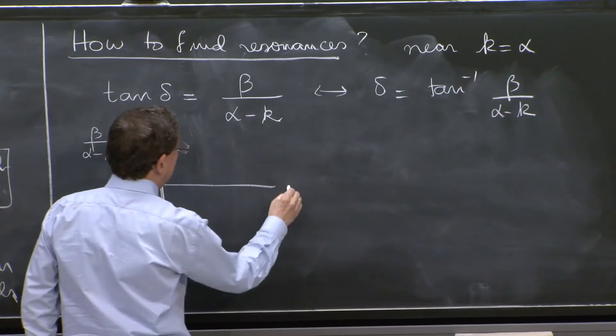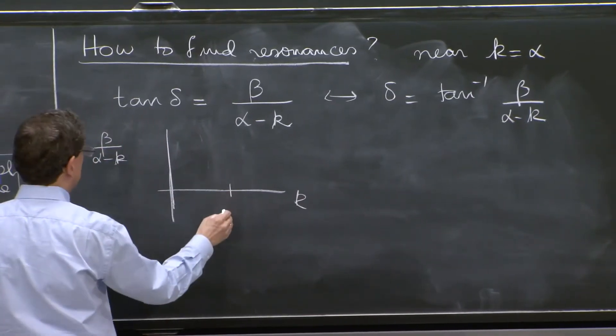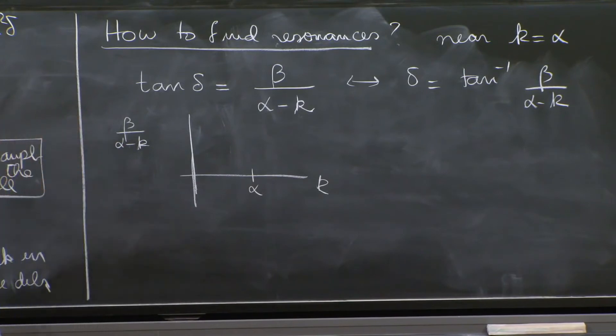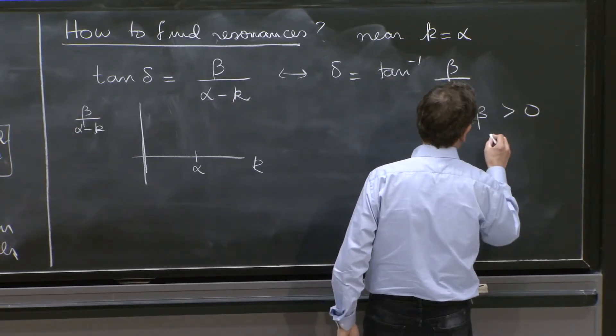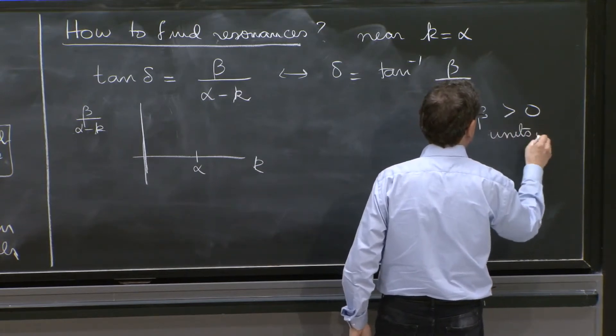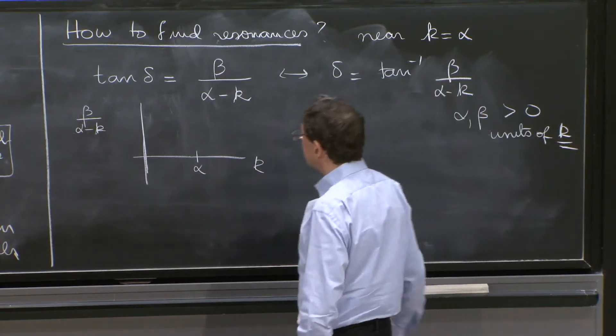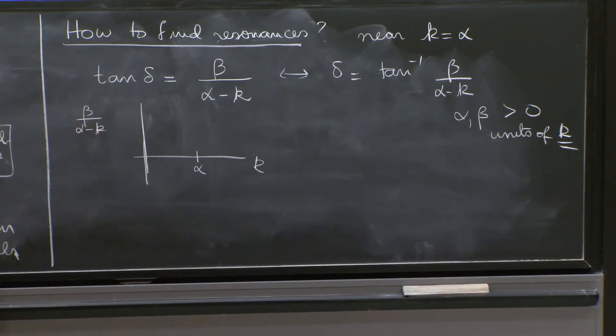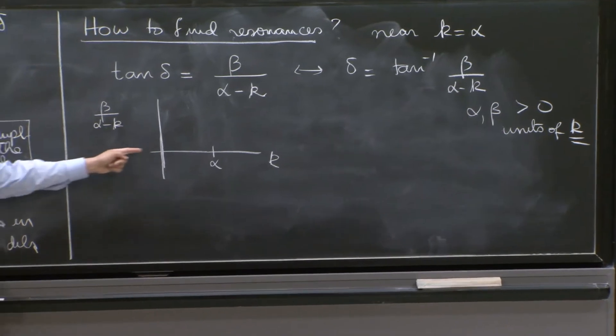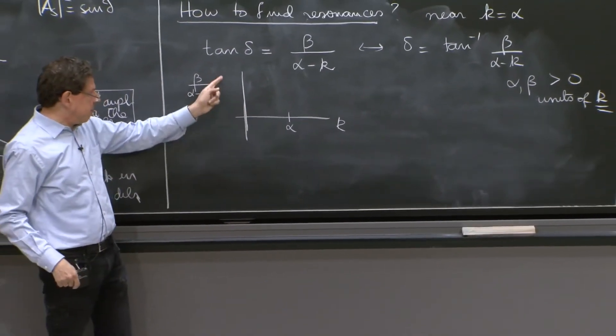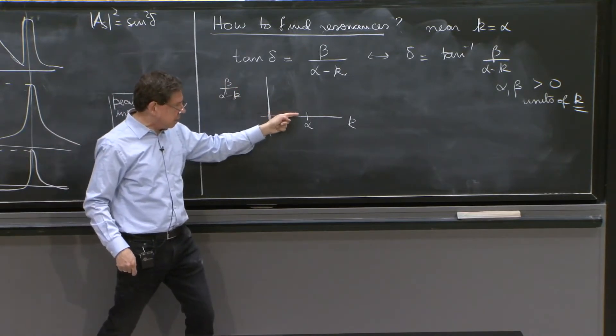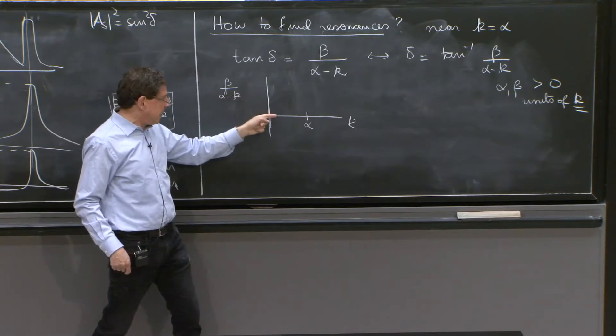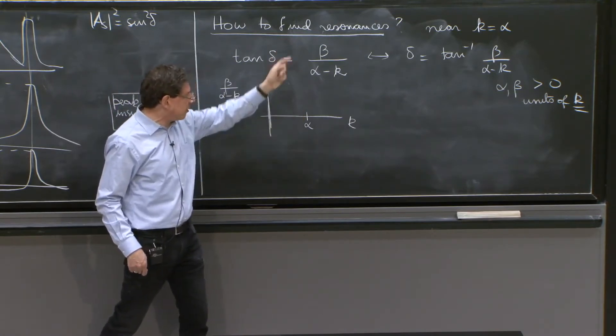So this is k, and we're plotting this quantity. Well, it's going to go crazy at k equal α. That we know. When k is less than α, I'm going to assume that α and β are positive. They both have units of k, and when k is less than α, you begin here. Then this denominator is positive, the numerator is positive. Ratio is positive, it's small maybe. And then suddenly, when k reaches α, it goes to infinity.